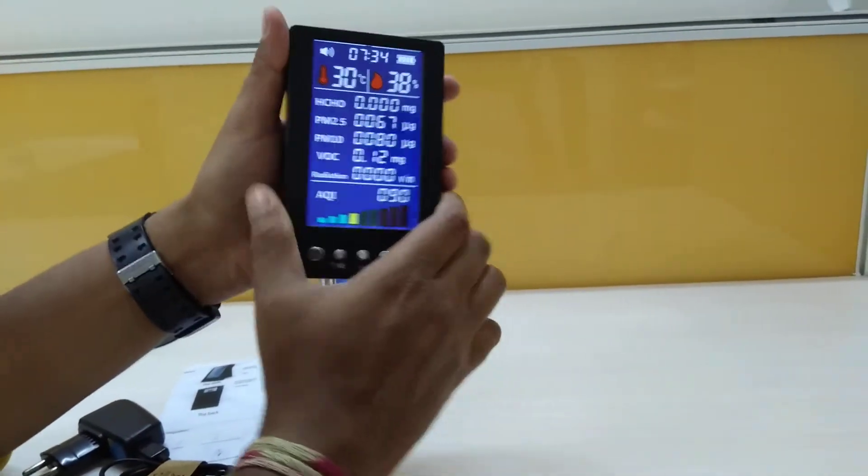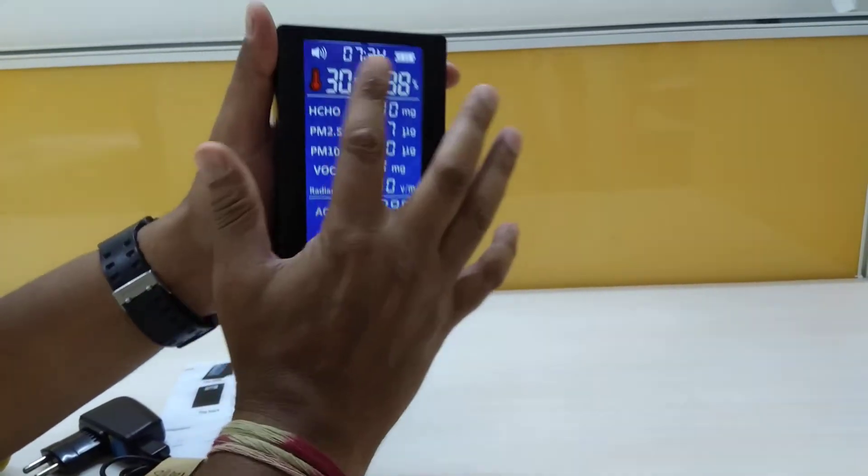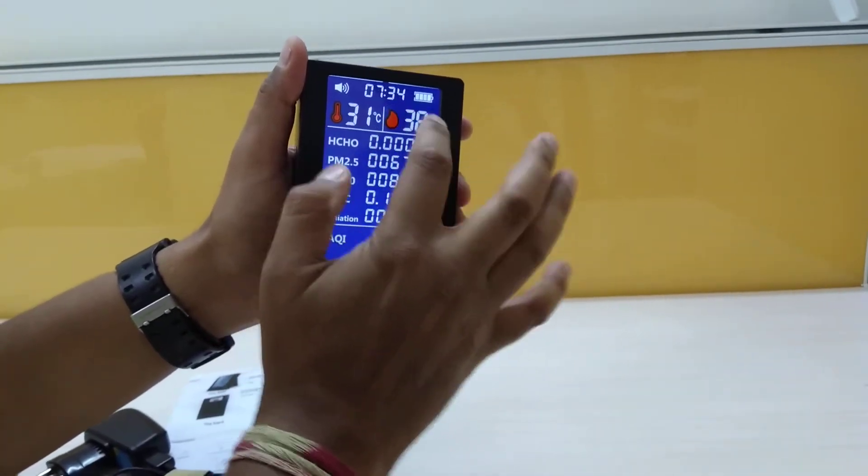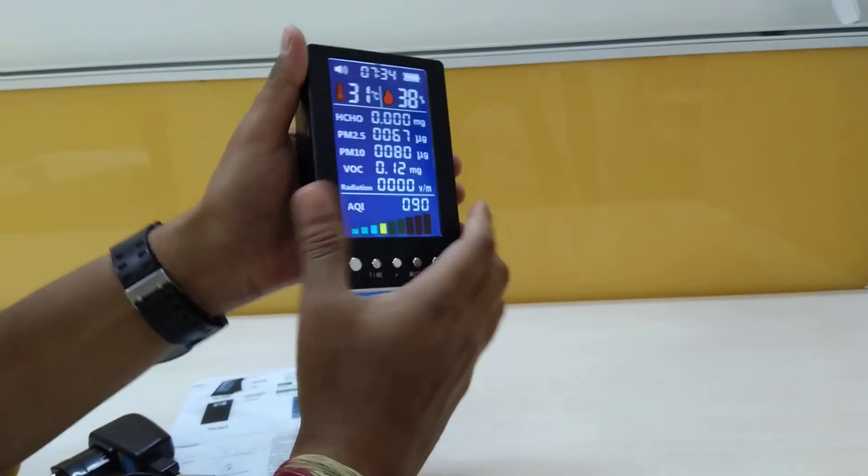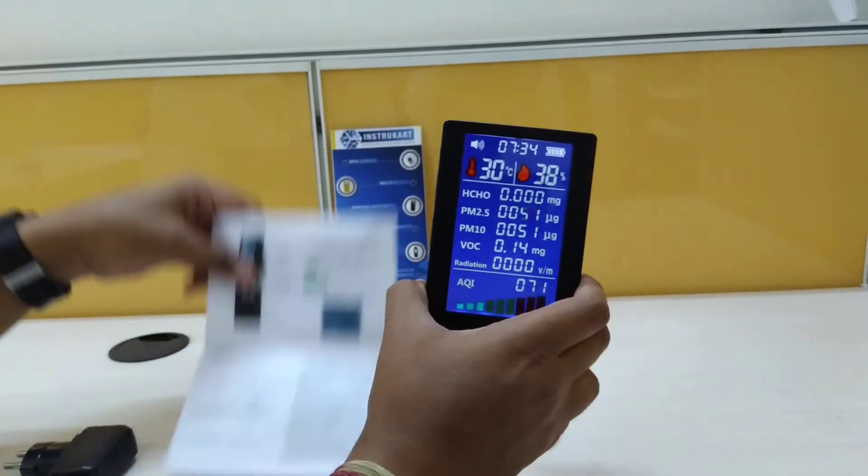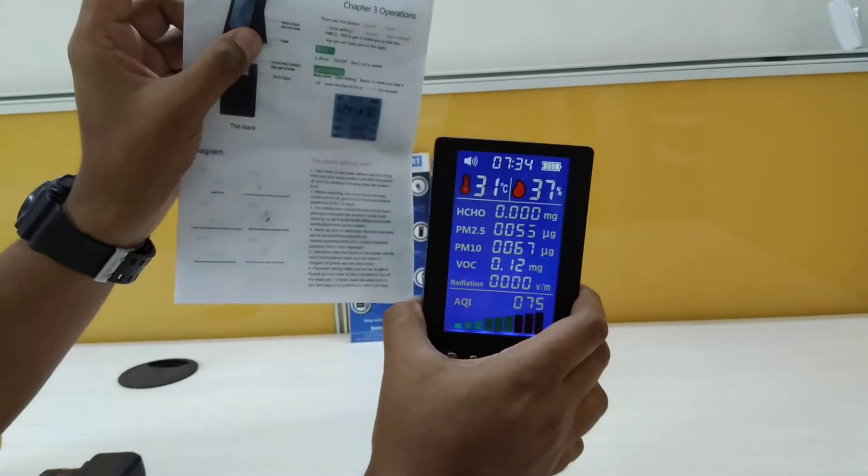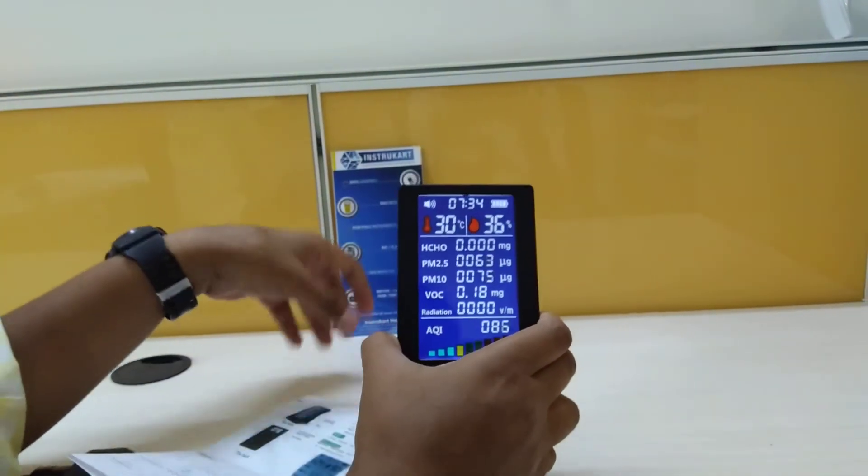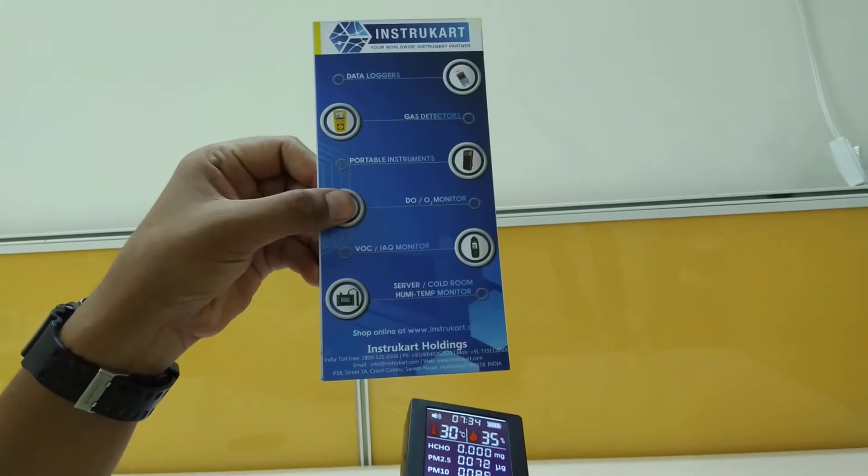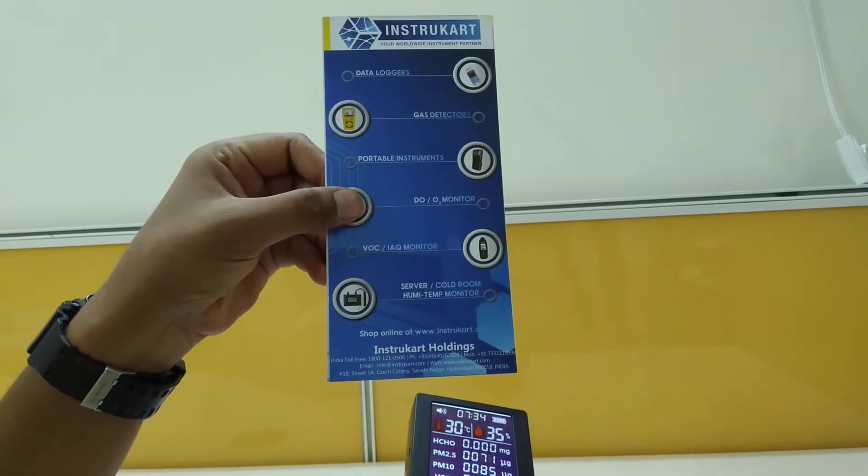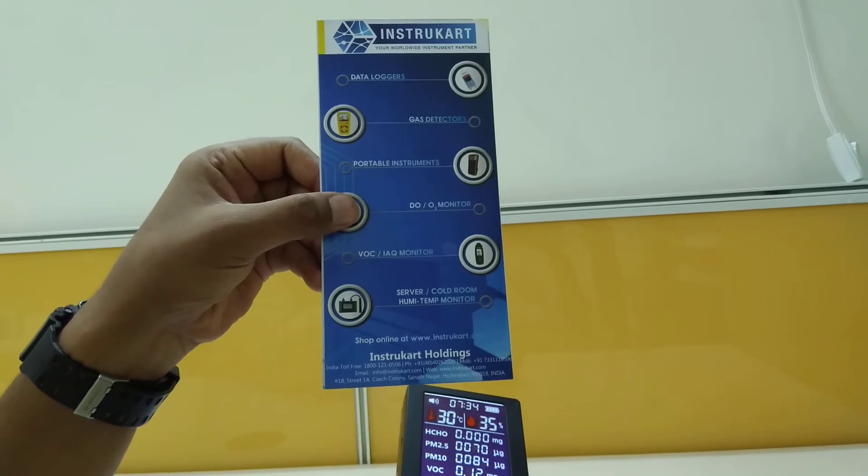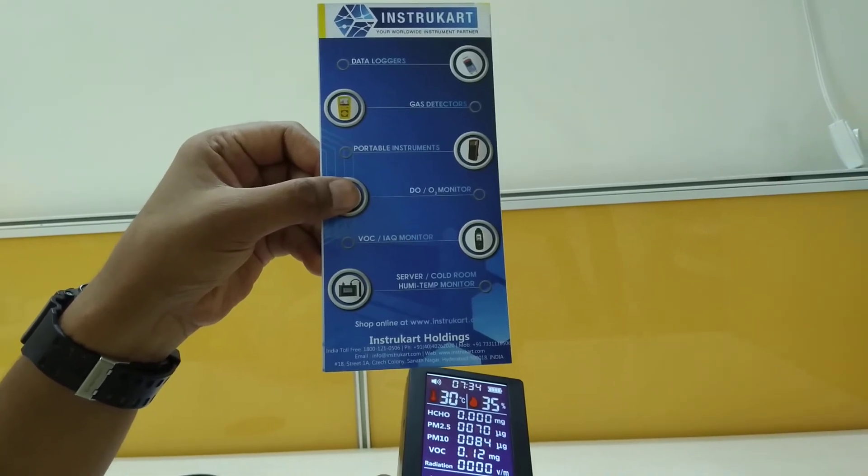Basically this is an LCD display with seven segment digits. This is the charger in the box and an instruction manual. For more information on this product, you can reach instrukart holdings at www.instrukart.com. Thank you very much.